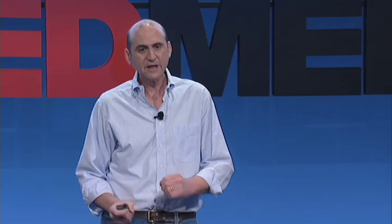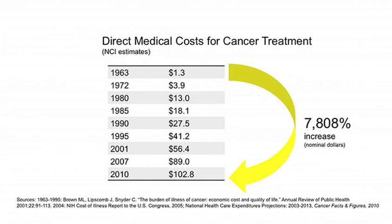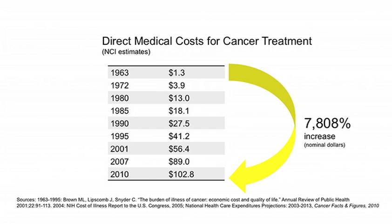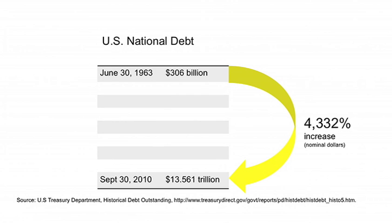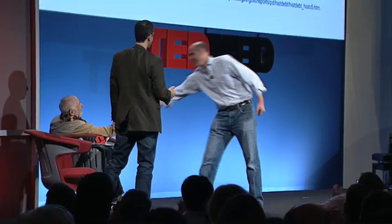Finally, the financial costs. I'm only going to leave you with two slides because I've run out of time. These are NCI numbers showing the growth rate in cost from 1963 to the latest figures — NCI and American Cancer Society numbers, and since they're nominal, not adjusted for inflation, I wanted to compare it with something: here's our runaway national debt.